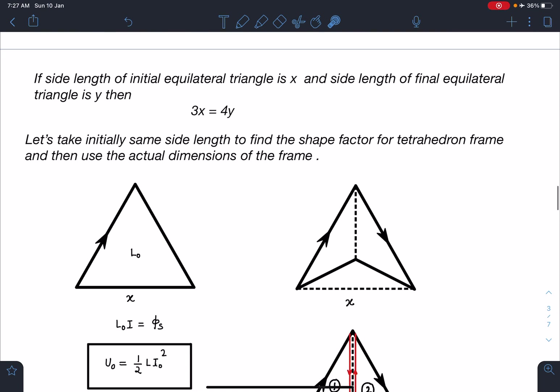That is my first condition but in order to proceed this, in order to find the inductance of this part, what I am going to do is first I am going to take same size of the triangles. I will explain you in a while why I have taken same size. Let's take initially same side length to find the shape factor for tetrahedron frame. Shape factor means that if this inductance is L₀ then maybe it is number times L₀, that kind of relation I want to find. Then we are going to use the actual dimensions of the frame.